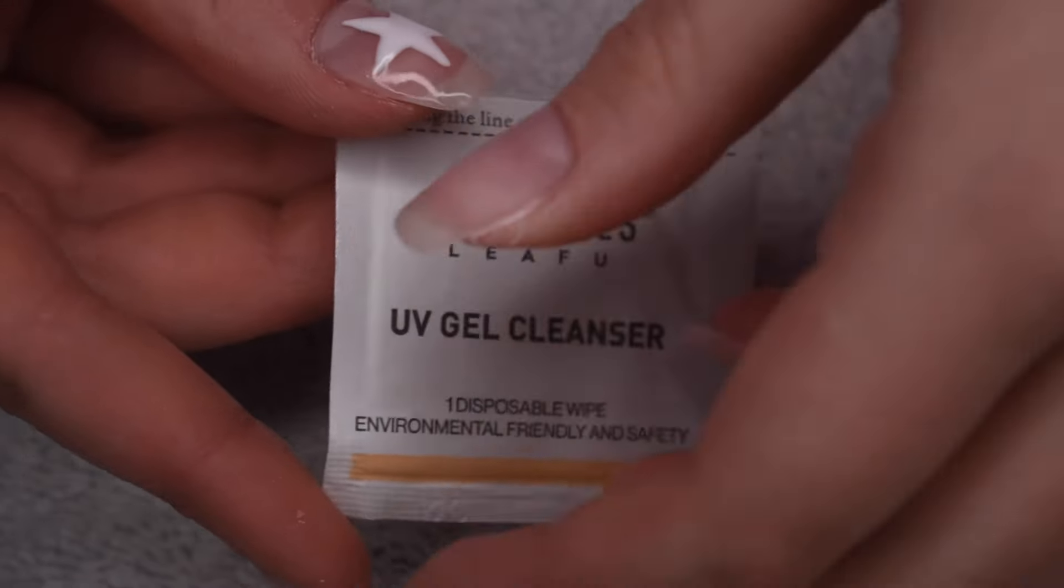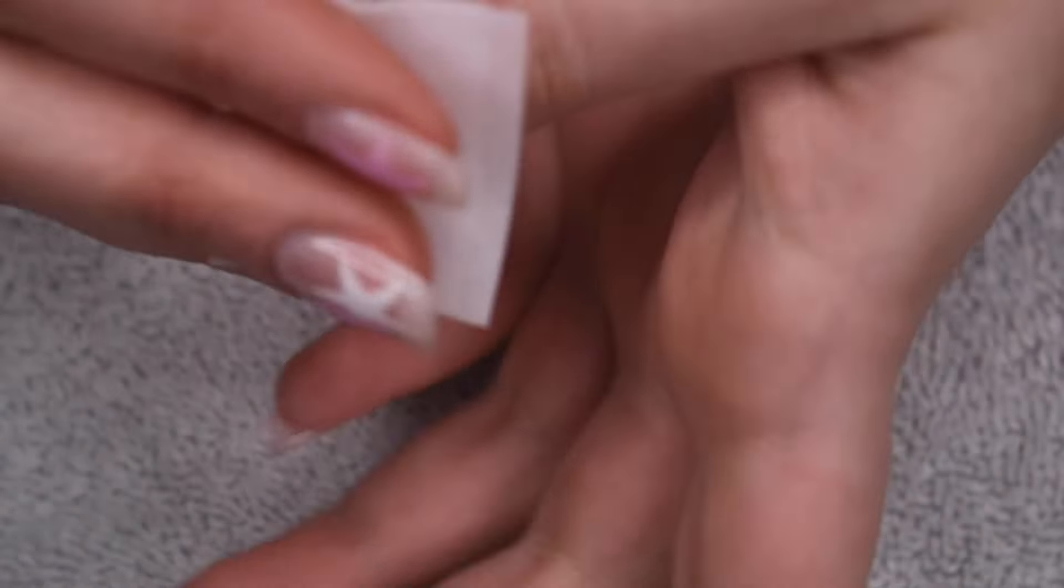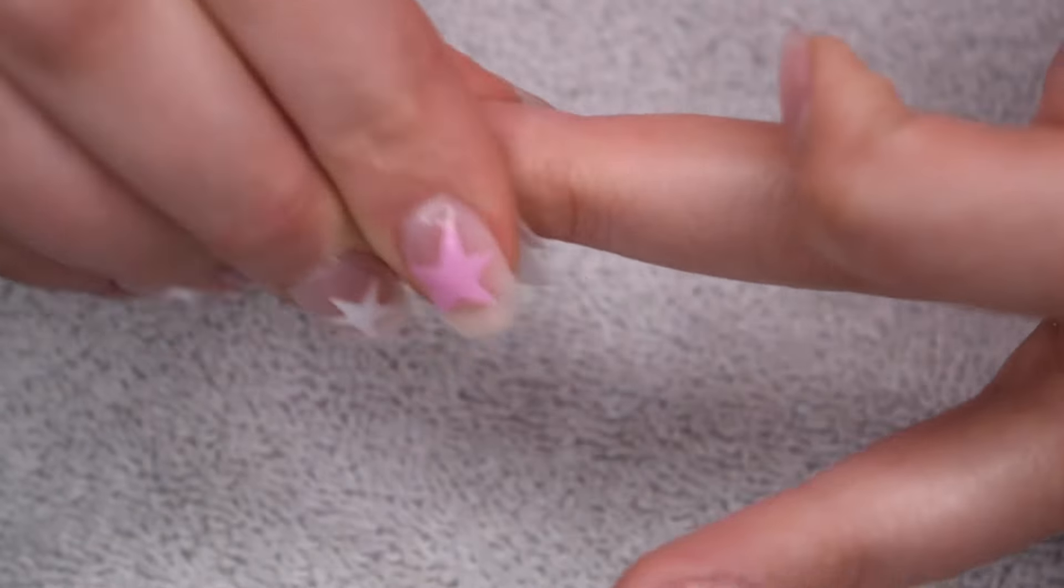And now I'm taking a cleansing wipe just to remove any of that excess dust from the filing. You can totally use rubbing alcohol here. I think these little individual pads are super easy to use, and I will link them below in case you want to purchase them.